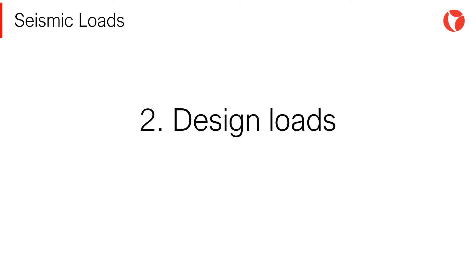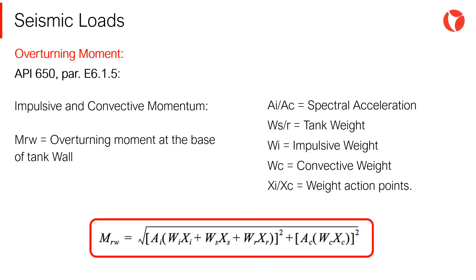Once all the previous coefficients have been obtained, now we are in a good position to determine the design loads. The overturning moment at the base of the tank must be determined by the equation indicated in section E6.1.5, which is reproduced below. As it can be seen, the overturning moment is a vectorial sum, square root of the sum of the squares of the impulsive and convective components of the overturning moment. In turn, these components are obtained by multiplying the spectral acceleration by the effective weight and by the action points coordinates.